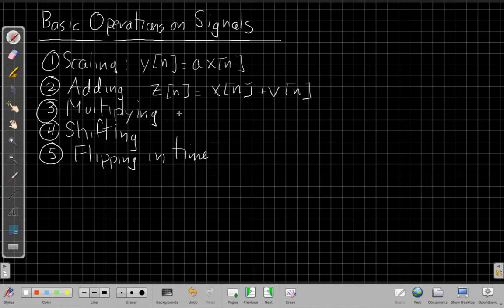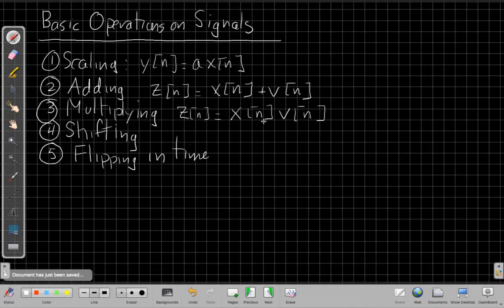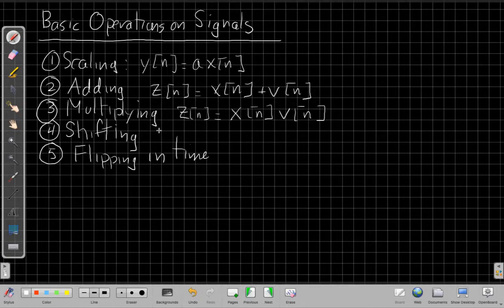I can also, we'll also see multiplying two signals together as an operation we'll use this semester. So if I had z[n], instead of adding the two signals, I could take the value of each signal at each time and multiply them together. So again, like z at time zero would be the value of x at time zero times v at time zero.